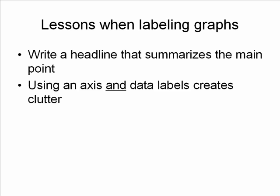Next, if you use both an axis and data labels, you're going to create a lot of clutter. In the original graph, they had a very packed axis, plus a data label on every single point showing the percentage. That's kind of like wearing both a belt and suspenders. There are very few times that's going to be useful — in most cases, it adds a lot of clutter that takes away from the effectiveness of your graph.